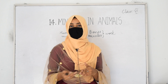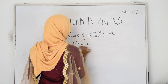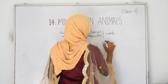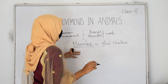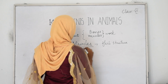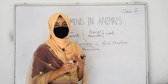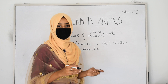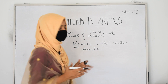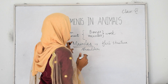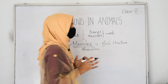Bones and muscles lie under our skin. What do we mean by muscles? Muscles are the fleshy structures found under the skin. When you look at your shoulders and other body parts, you can find the movement of fleshy structures present beneath the skin. Those fleshy structures are called muscles.